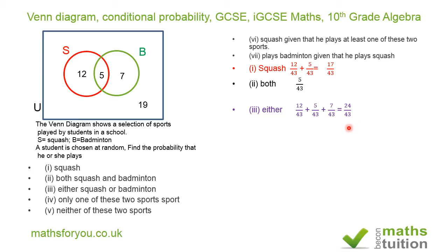For question four — only one sport — you cannot play both, so we exclude the 5 in the intersection. We take squash only (12) and badminton only (7): 12/43 + 7/43 = 19/43.